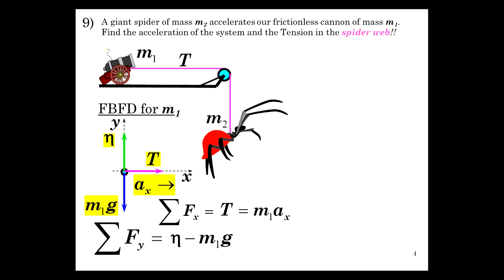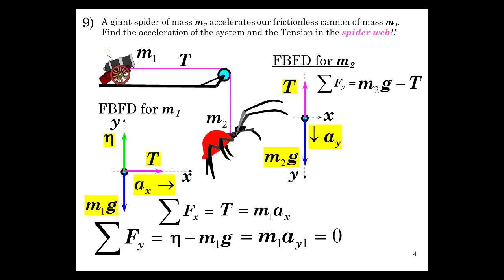Sum of Fy is normal minus m1g, which is m1ay, which is zero. Now for m2, we again define our coordinate system, the weight of the spider, the tension in the web, and the acceleration. The acceleration is going to be downward from the spider's point of view. Sum of Fy is m2g minus t, which is m2a.